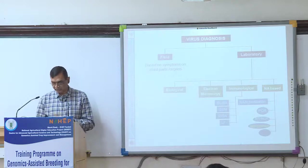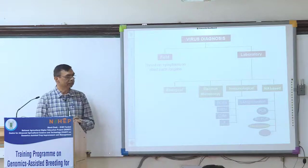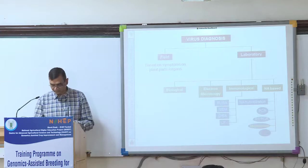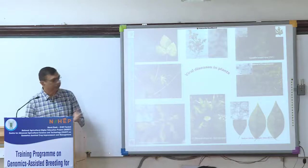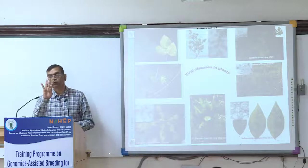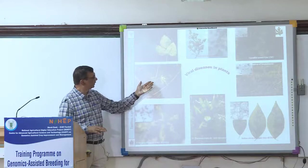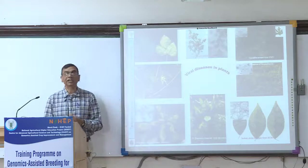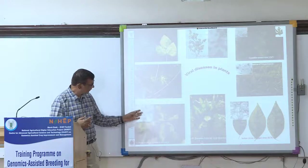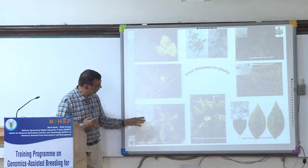Immunological and nucleic acid-based methods are the two most widely used techniques for identification and characterization of viruses. Based on symptoms alone, you cannot identify the virus. For example, mung bean yellow mosaic disease is caused by four species of Begomovirus. In papaya, shoestring disease along with leaf curl symptom is caused by two different viruses: papaya ring spot virus and papaya leaf curl virus. Similarly, in citrus, mixed infections occur. Banana bunchy top is caused by banana bunchy top virus — no other virus has been associated so far.